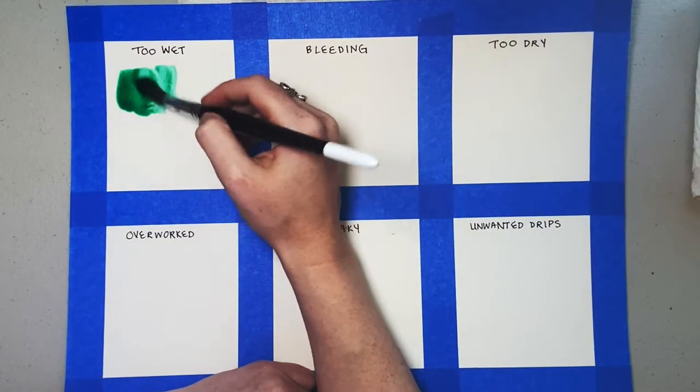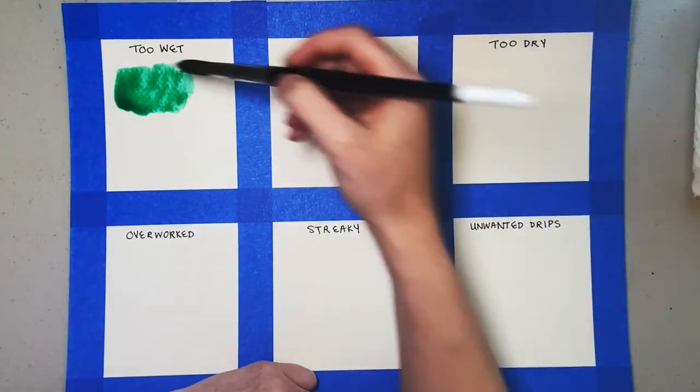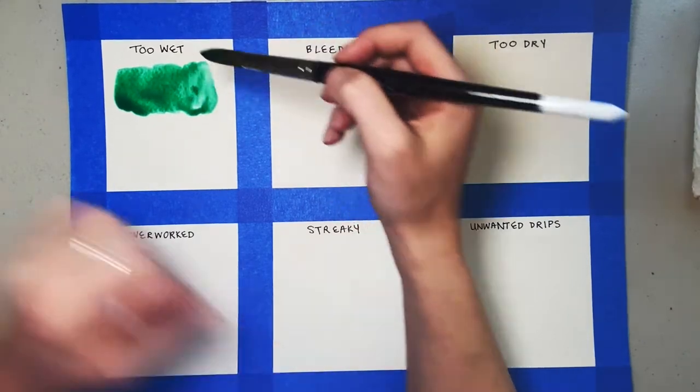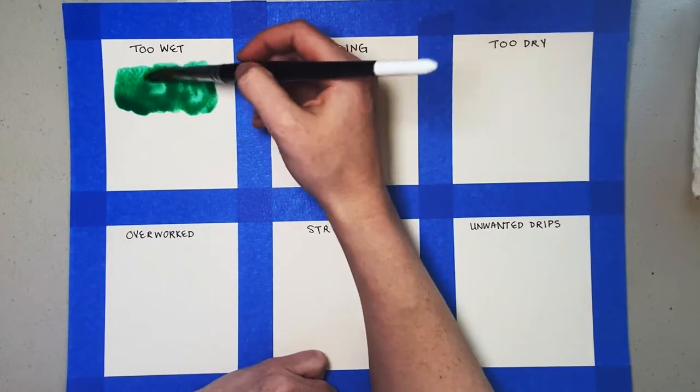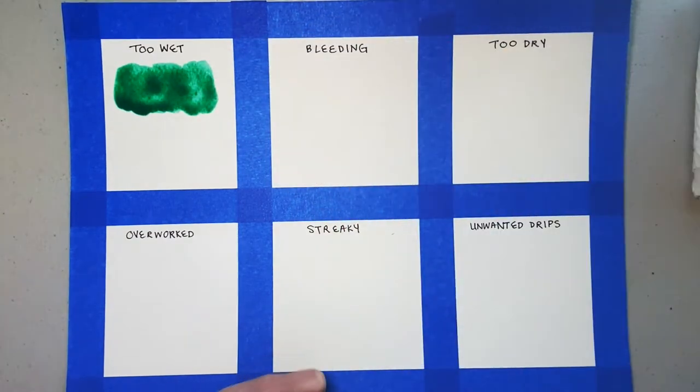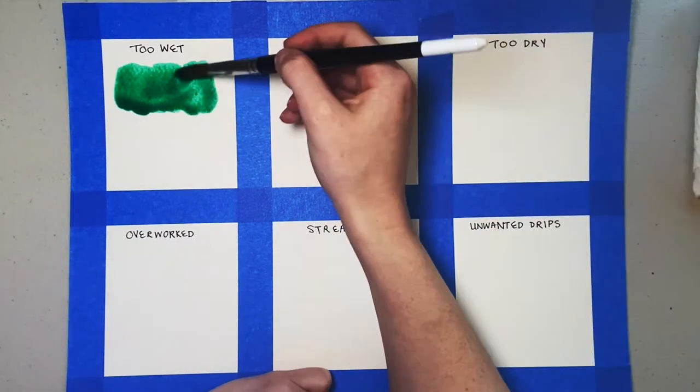So first you can see we have a really watery wash. You can see that it's really hard to control and looks splotchy. The water will pool and can sometimes end up dripping all over your painting. It's really annoying.